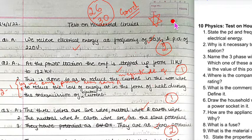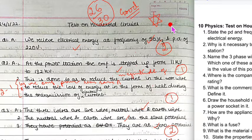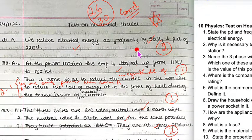Hello, class 10 students. This is the solution to the test on household circuits, which is part of your class 10 physics syllabus of semester 2. This test is on 30 marks. This is the solution of one of the students who has got 26 marks out of 30. Let us see how we have to improve our marks and what is the correct way of writing the solutions.